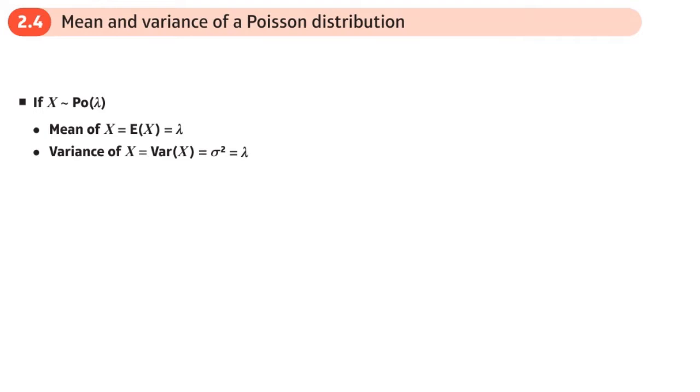We also need to know what the mean and variance of a Poisson distribution is. So it might be worth just recapping. If we've got discrete data or continuous data and we want to find the mean, remember the mean is the sum of fx over the sum of f. And the variance is the sum of fx squared over the sum of f, and then you subtract the mean squared.